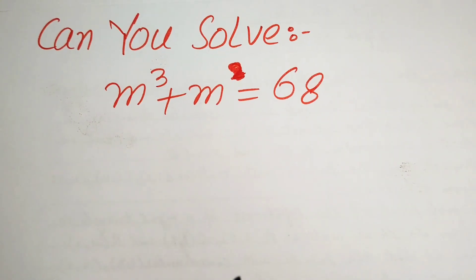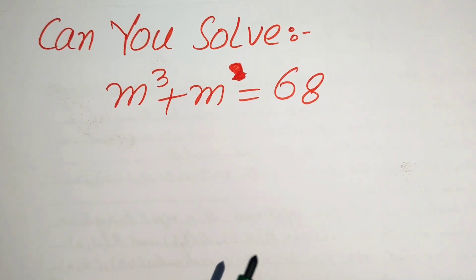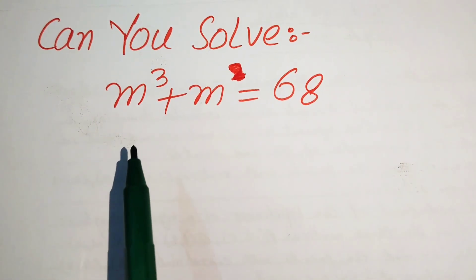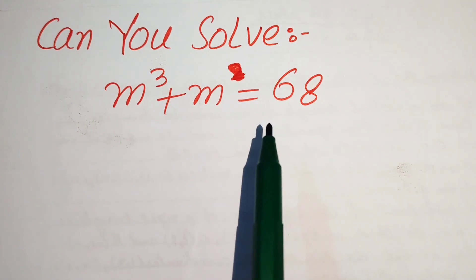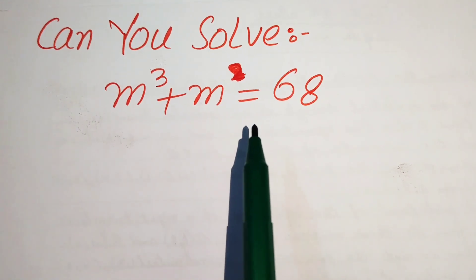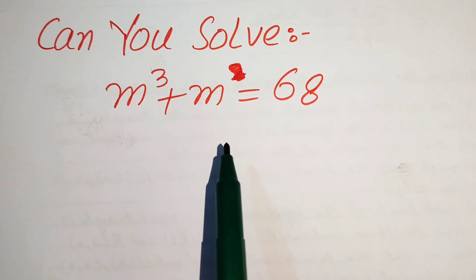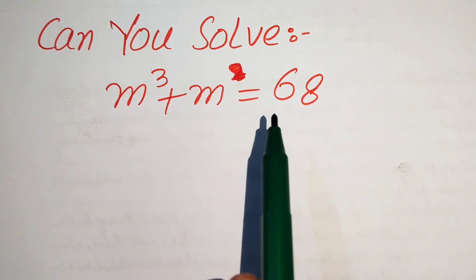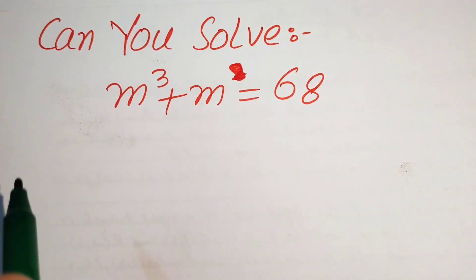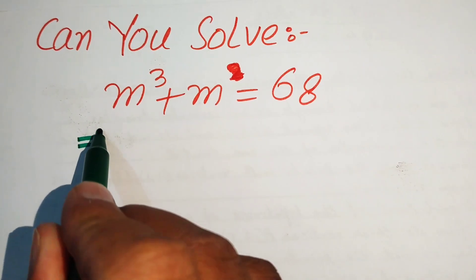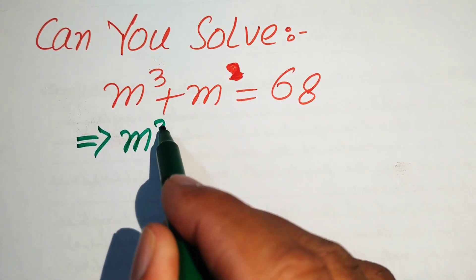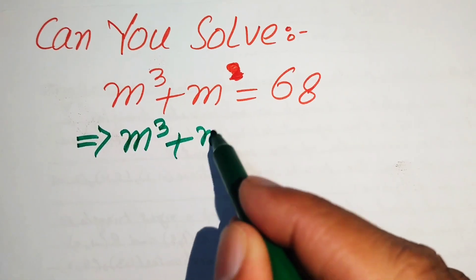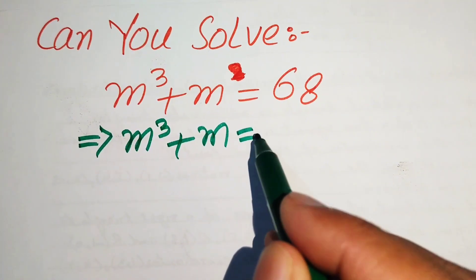Hello everyone, welcome. We are going to solve this Math Olympiad algebra problem. We have m³ + m = 68, and we solve this problem for the values of m. First, we focus on the right-hand side: we have 68, and we rewrite 68 in a useful form for m³ + m.